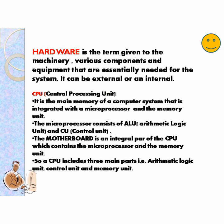Hardware is the term given to the machinery, various components and equipment that are essentially needed for the system. It can be external or internal. The first hardware to discuss today is CPU, i.e. Central Processing Unit.